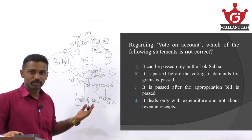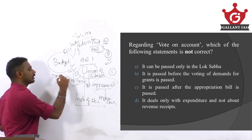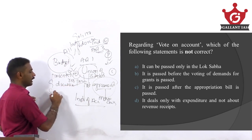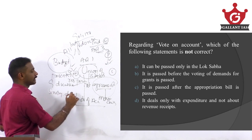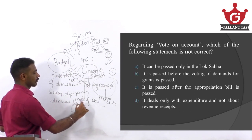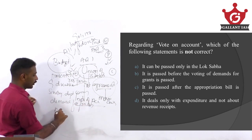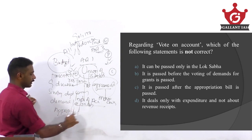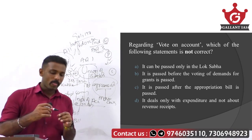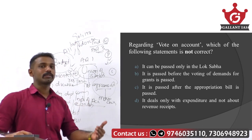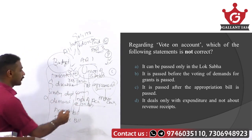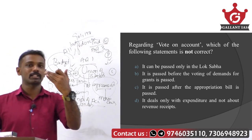What is the budget enacting procedure? First, presentation of the budget. Second, general discussion. Third, scrutiny by departmental committees. Fourth, voting on demand for grants. Fifth, passing of the appropriation bill. Sixth, passing of the finance bill. This is the procedure for the enactment of a budget. For money to be withdrawn from the Consolidated Fund of India, parliamentary approval is needed, and only after this entire procedure is complete can money be withdrawn.